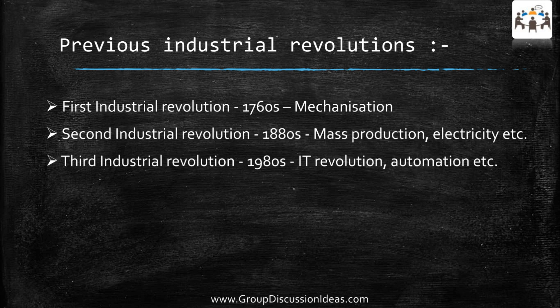The second industrial revolution was started in the 1880s and it included mass production and electricity. The third industrial revolution was started in the 1980s and it is a transition from electrical to electronics, which means it brought IT, automation, etc.